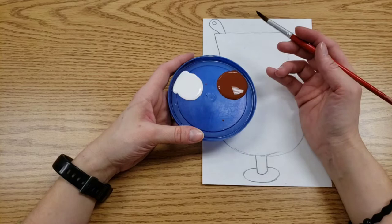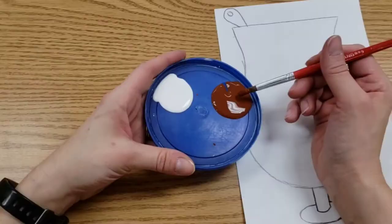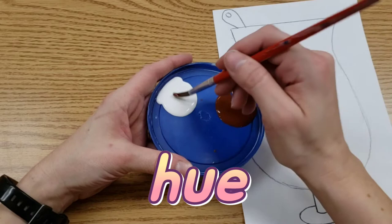Tints are where you take any color and we add white and that makes the color lighter. In our case, we're going to start light and make it darker because that's just easier to do. So, we're going to take a little bit of your main hue. Hue is the pure unmixed color.